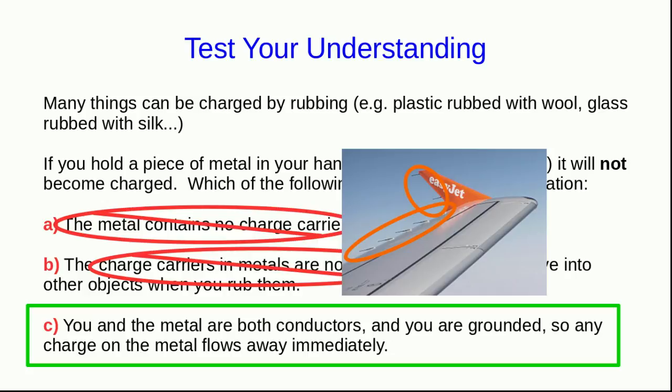Those are so that the charge on the plane collects on the sharp points. We'll see in the course later why charge collects on the sharp points, but the purpose of this is just that having charge all over the skin of the airplane interferes with the operation of various of the plane's electronics.